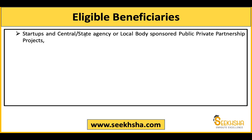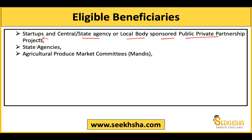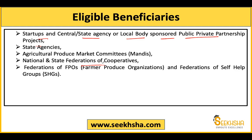Eligible beneficiaries under the Agriculture Infrastructure Fund include: startups, central and state agencies, local body-sponsored public-private partnership projects, state agencies including APMCs, national and state federations of cooperatives, cooperative societies, FPO federations (where multiple FPOs — A, B, C — come together to form a team, called a federation), and multiple purpose cooperative societies (MPCS).